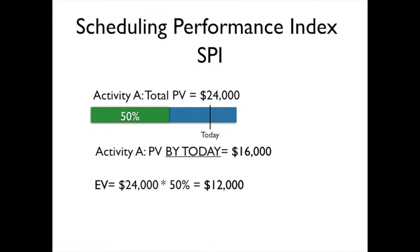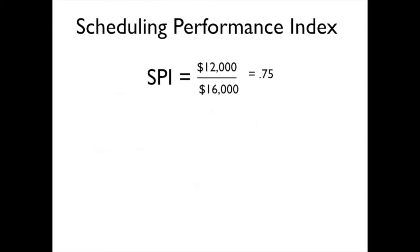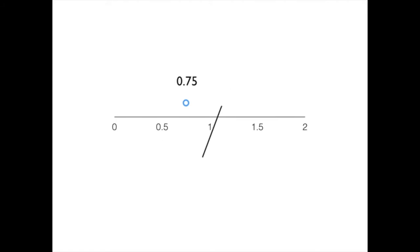Then we're going to compare that $12,000 to the planned value by this particular point in time. So we're going to take $12,000 divided by $16,000, and we come up with a scheduling performance index of 0.75. 0.75 on our scale is indicating that we are, in fact, behind schedule.